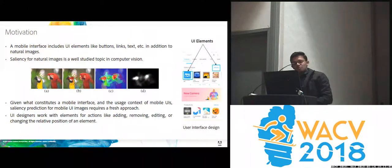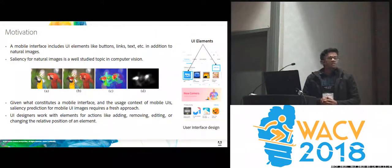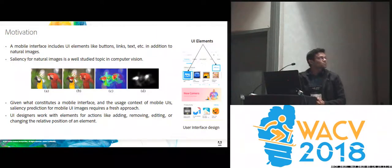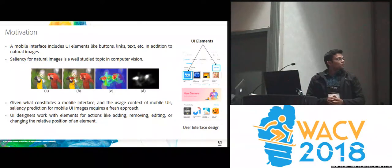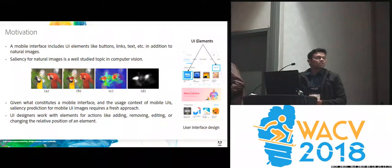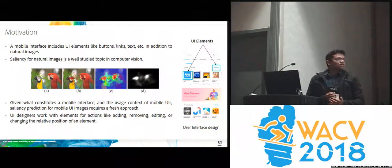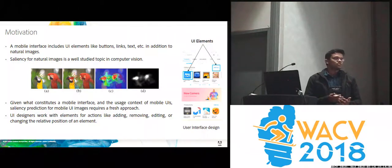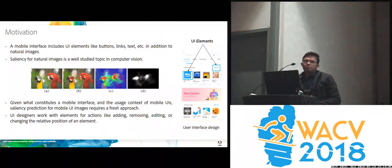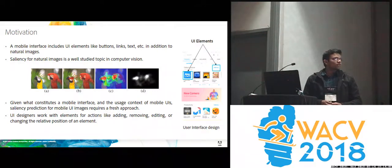Mobile interfaces include UI elements such as buttons, links, and text boxes, some of which are shown on the right image. Saliency prediction for natural images is a well-studied topic in vision, but given the difference in what constitutes a mobile interface as well as the usage context of mobile UIs, we postulate that saliency prediction for mobile UI images requires a fresh approach.